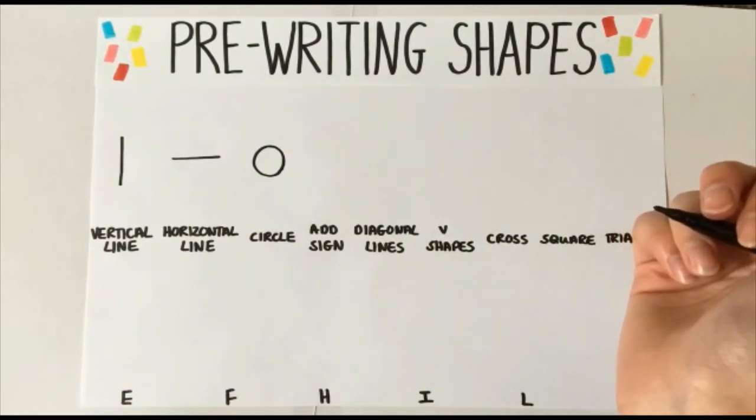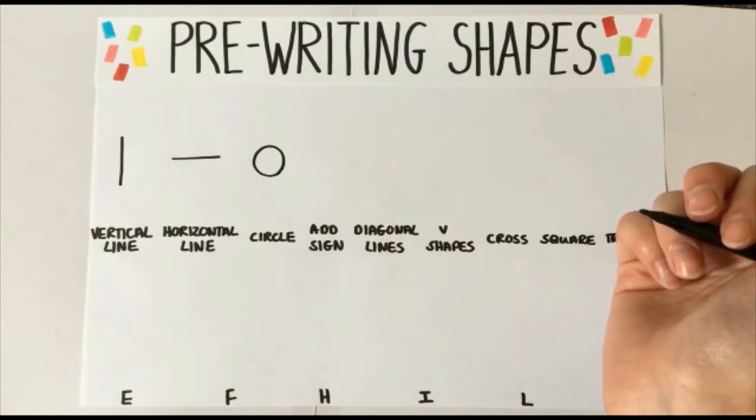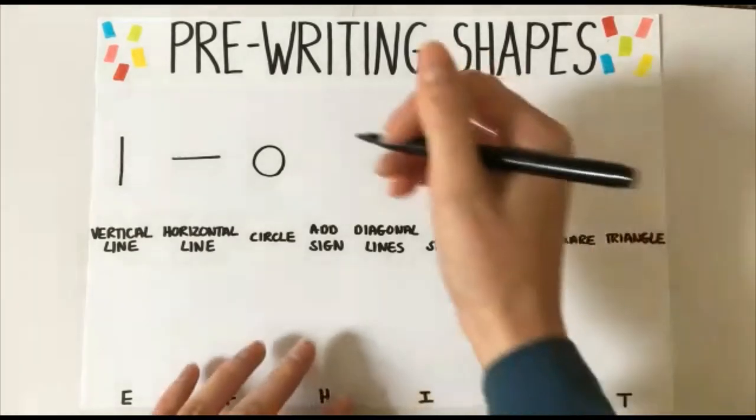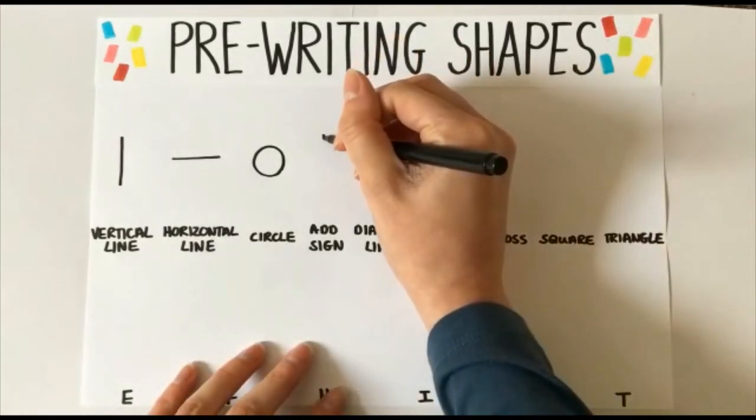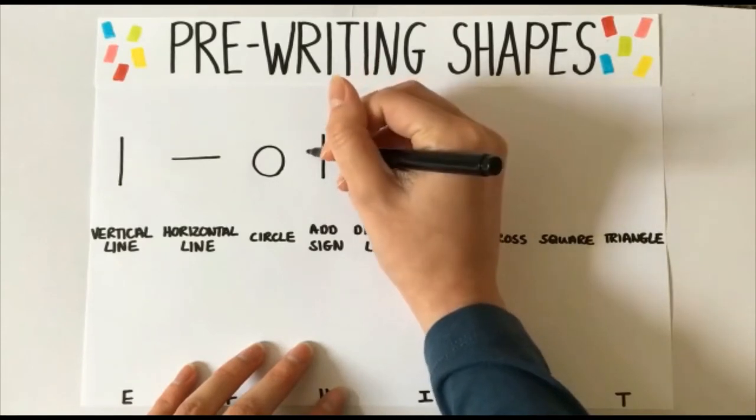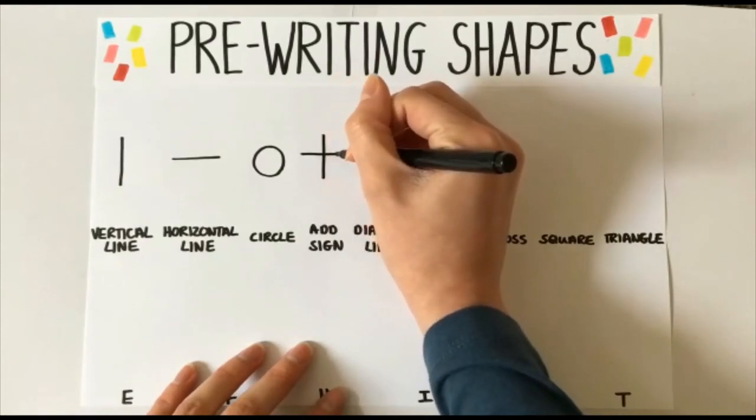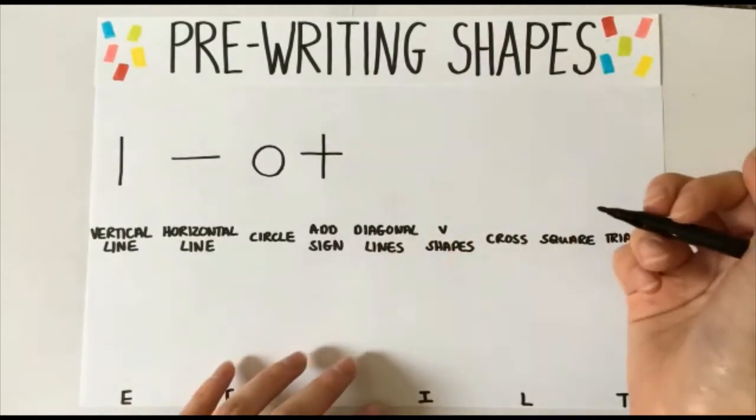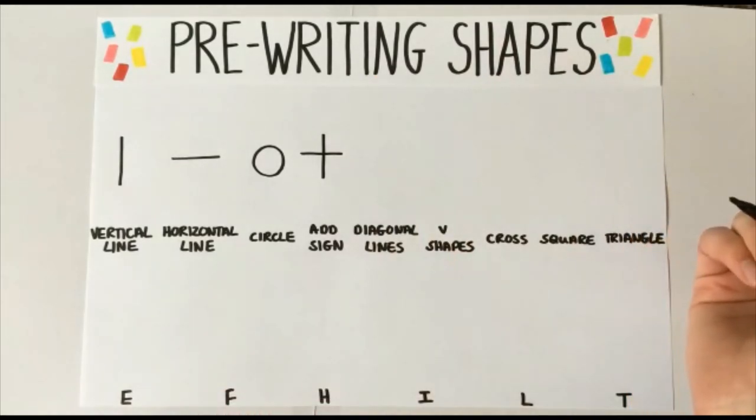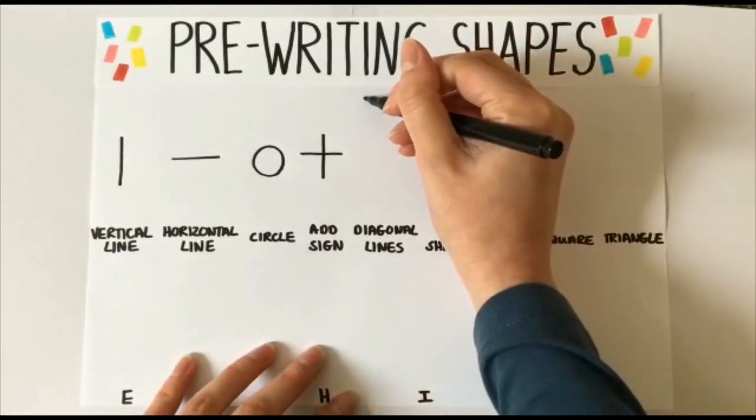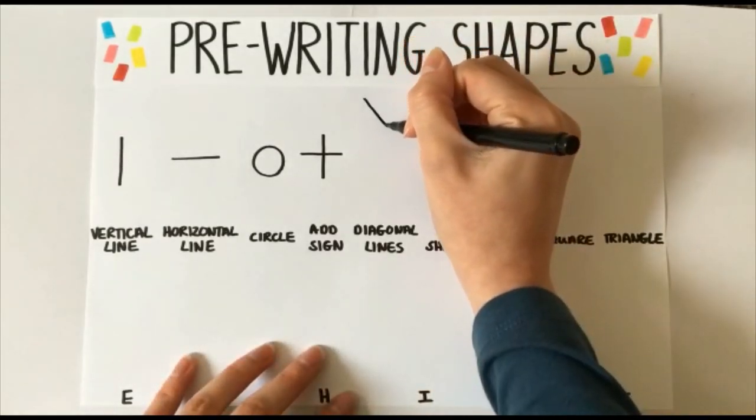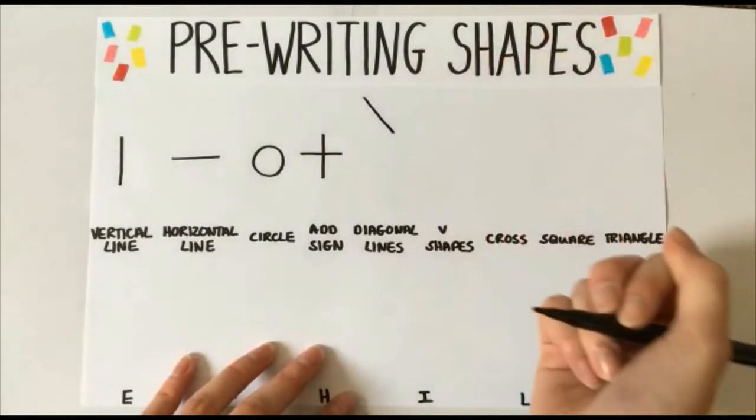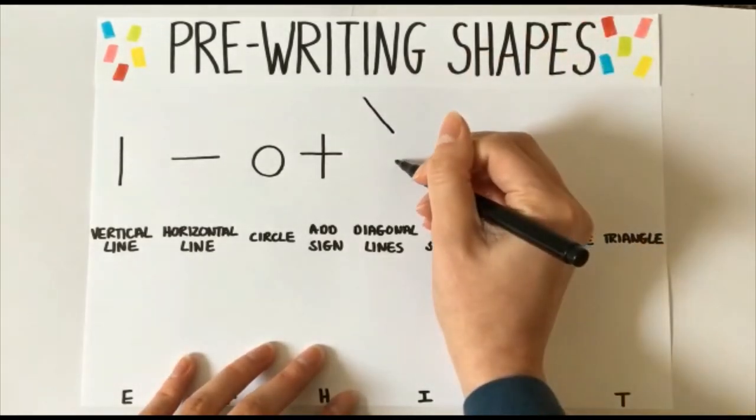Next is the add sign. This is where we need to put our vertical line and horizontal line together. Start at the top, go down, pen off and then left to right. Diagonal lines. These are a bit like forward and backward slash. You need to start at the top and go across and down at the same time. See if you can do this the other way.